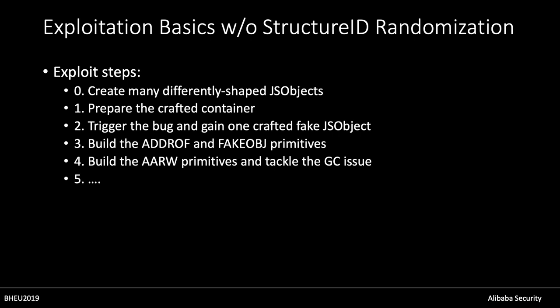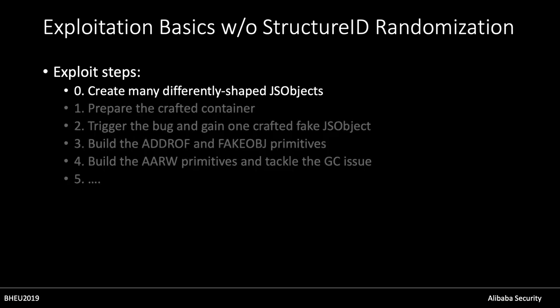Without structure ID randomization, the exploit steps are: first, create many differently-shaped JS objects; then prepare the craft container; trigger the bug and gain one crafted JS object; then build the addrOf and fakeObject primitives; build the arbitrary address read/write primitives and tackle the garbage collector issue. For macOS, we can easily gain arbitrary code execution. However, for iOS, we have to figure out a way to bypass PAC mitigation. The answer to why we need differently-shaped JS objects is that the fake JS object needs a proper shape — without structure ID randomization, we can predict and use the internal shape objects without triggering any bugs.